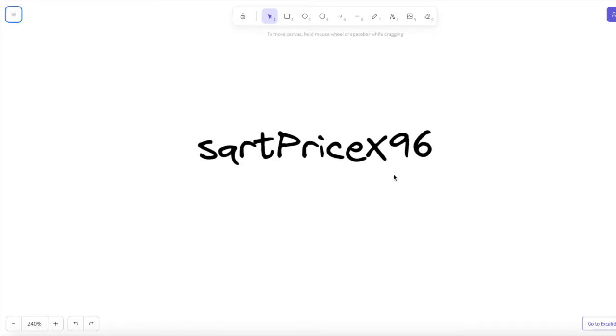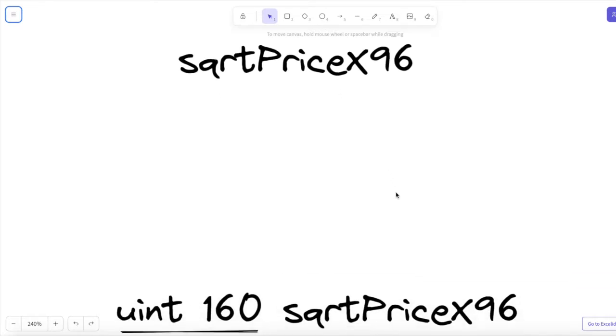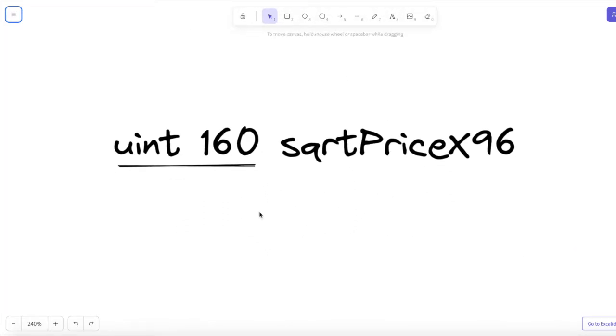There's a few things you need to understand about the square root price x96. Its data type on the pool contract is an unsigned integer 160. That means it holds 160 bits of information.